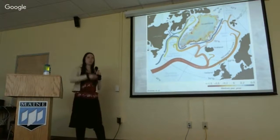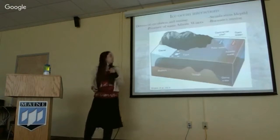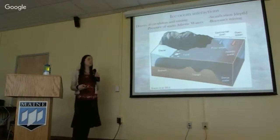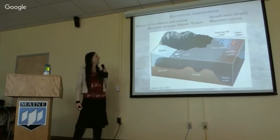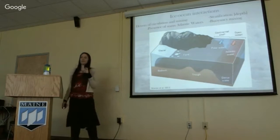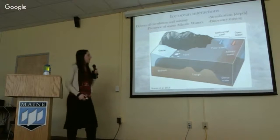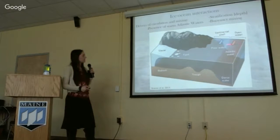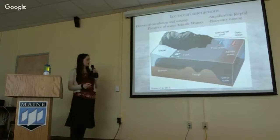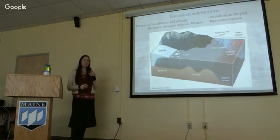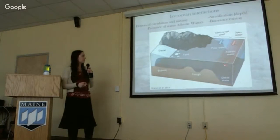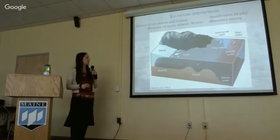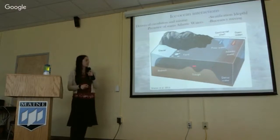Now we're going to zoom into a plan view of this to look at why the bathymetry, or the underwater topography of this region is important. As you can see in this schematic diagram, we have the glacier over here terminating in this fjord. At the surface we have polar water, which is relatively cold and light. Further out and also at depth we have Atlantic water, and there's a particular depth of the interface between these two water masses.